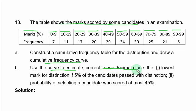Part B of the question: Use the curve to estimate, correct to one decimal place, the lowest mark for the distribution if 5% of the candidates passed with distinction. The probability of selecting a candidate who scored at most 45%.